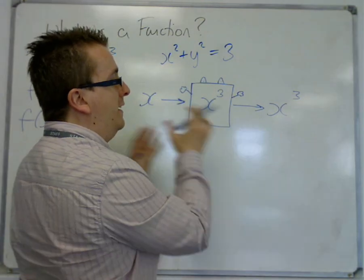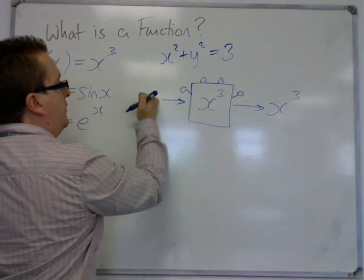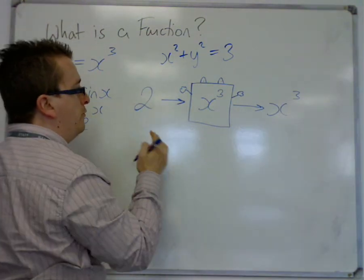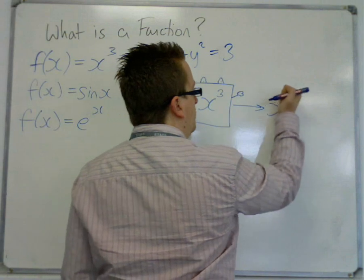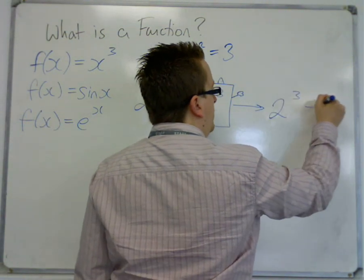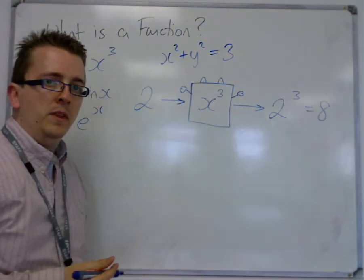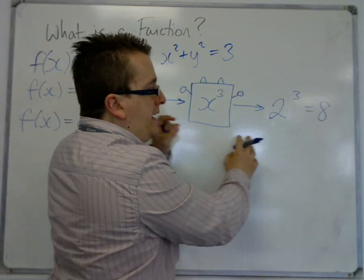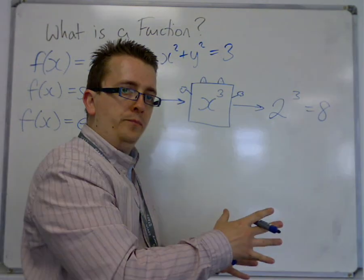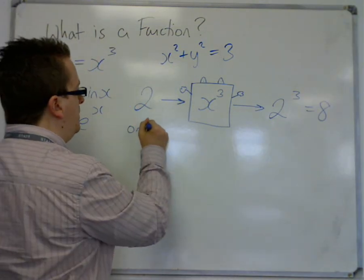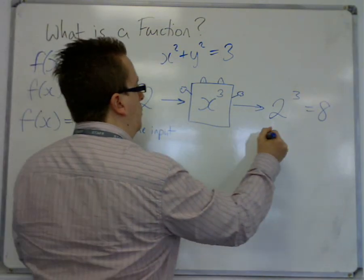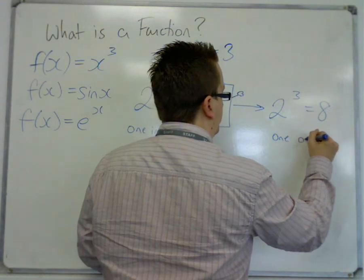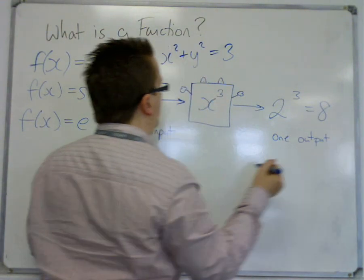So if I put through the number 2, for example, it goes through the function machine and it becomes 2 cubed, which is 8. So that for every input that I put in, I get a single output. So one input, one output.